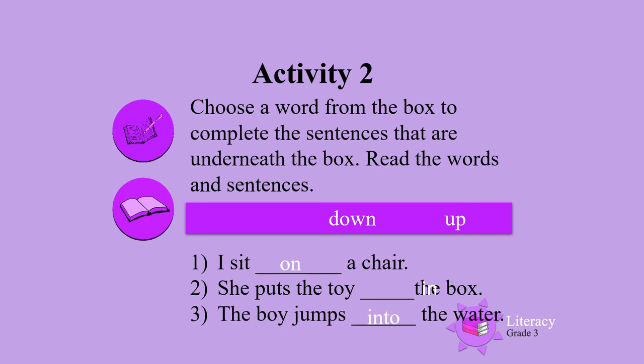Activity 2. Choose a word from the box to complete the sentences underneath the box. Read the words and the sentences. Number 1: I sit a chair. Choose a word from the box to complete that sentence.